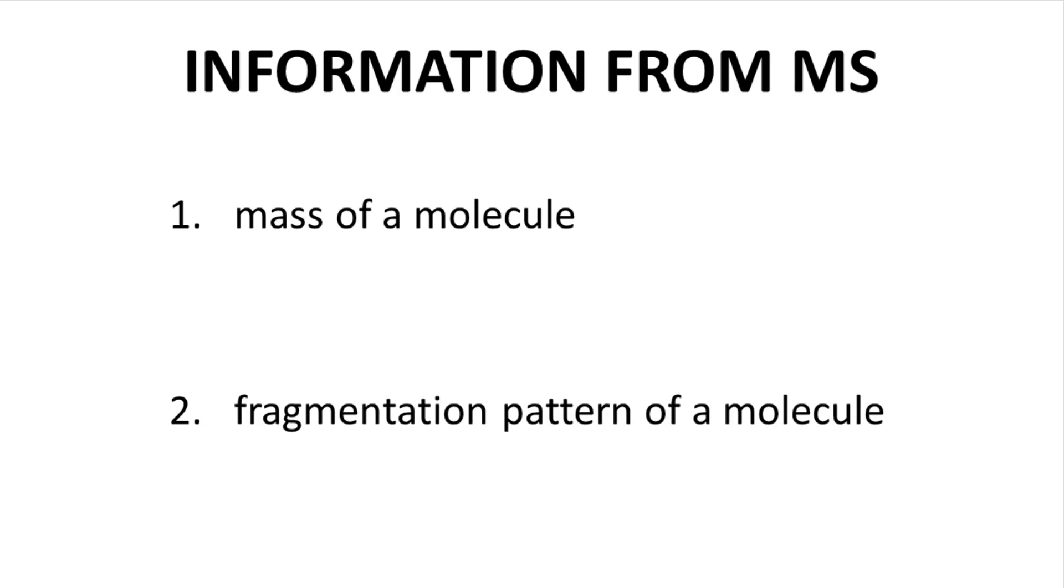What kind of information can be obtained through mass spectrometry? There are two main pieces of information. First is the mass of a molecule. When performed under the correct conditions, a mass spectrum can reliably indicate the mass of a molecule.